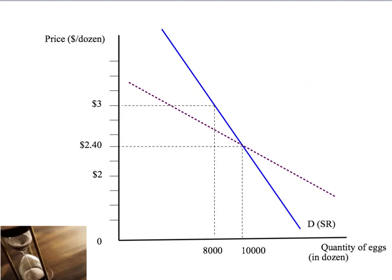But now, let's introduce the concept of time. We've looked at the short-run or the immediate effect, but what's going to happen over time as people adjust to the new higher price of eggs? Well, that's represented by our new dotted line that we've got here — that's going to be our long-run demand curve. Notice that it still goes through our original point. If the price hadn't changed from $2.40, then people would still be buying 10,000 dozen eggs — that's in the short-run or long-run. If there's no change, nothing happens.